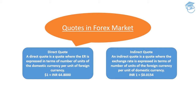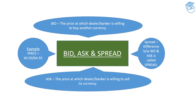These two primary quotes — direct and indirect — will be very useful while solving questions in forthcoming presentations. Now let's move to the second topic: bid, ask, and spread. Bid is the price at which the dealer or banker is willing to buy another currency. I'll explain these concepts from two perspectives: you as a common individual, and you as a banker or dealer.